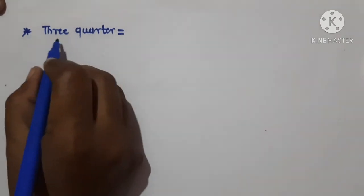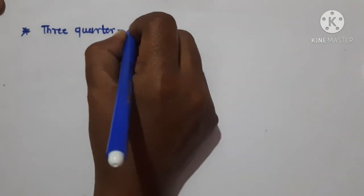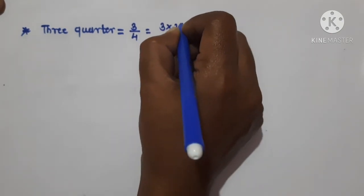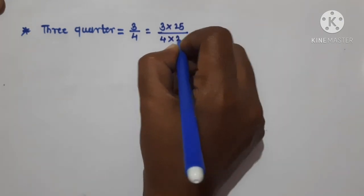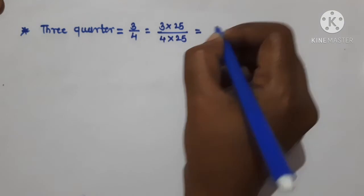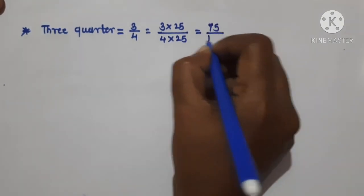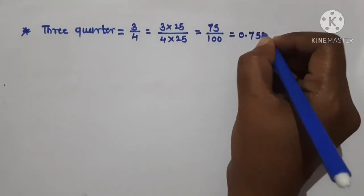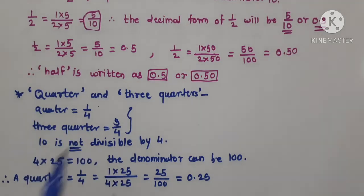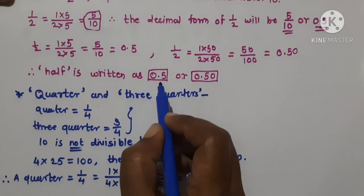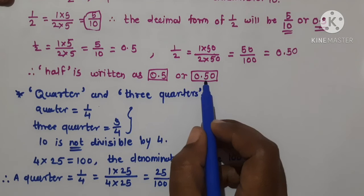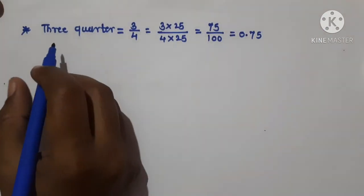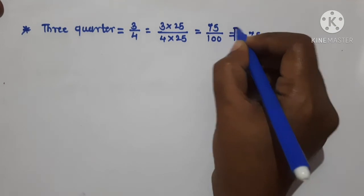Now let us convert three quarters into decimal form. 3 quarters means 3 upon 4. So 3 × 25 upon 4 × 25 equals 75 upon 100, which is equal to 0.75. So in decimal form: half is written as 0.5 or 0.50, quarter is equal to 0.25, and three quarters is equal to 0.75.